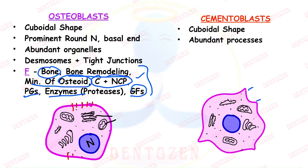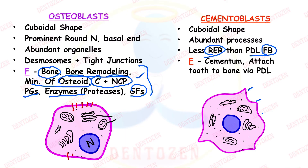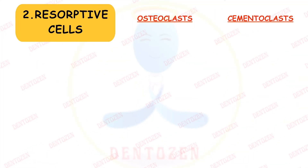Similarly, cementoblasts are also cuboidal shaped cells with abundant processes but less rough endoplasmic reticulum compared to fibroblasts. Their function is formation of cementum and attaching the tooth to the bone via the PDL.